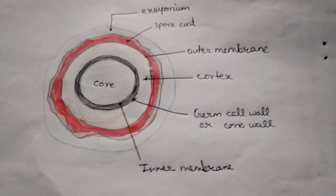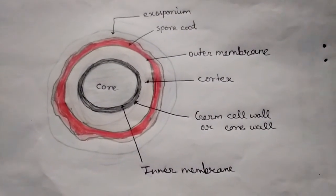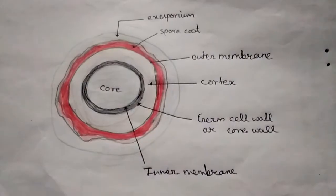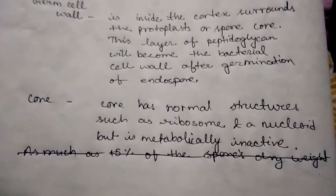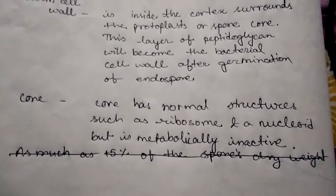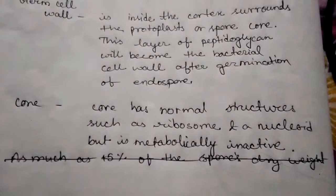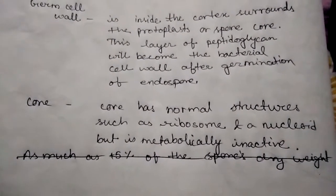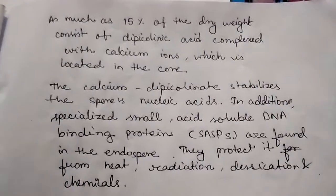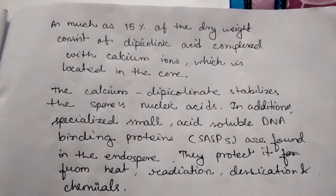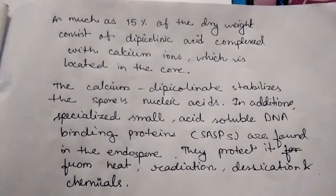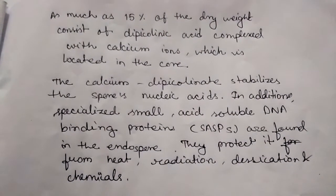Core: beneath the core wall there is an inner membrane which surrounds the core. Core has normal structures such as ribosomes and nucleoid but is metabolically inactive. As much as 15% of the dry weight consists of dipicolinic acid complex with calcium ions, which is located in the core.